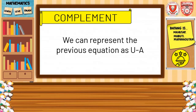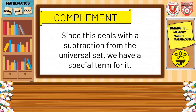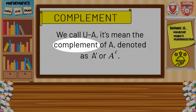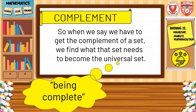Complement. We can represent the previous equation as U minus A. For set E, wherein we subtracted mathematicians with a beard from the universal set, we can represent this as the equation universal set minus set A. Since this deals with subtraction from the universal set, we have a special term for it. We call U minus A the complement of A, denoted by a special symbol. If we say complement, this is the thing that completes. So when we say we have to get the complement of a set, we find what that set needs to become the universal set.